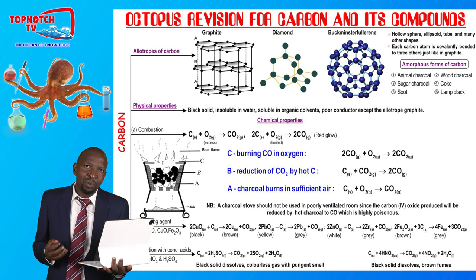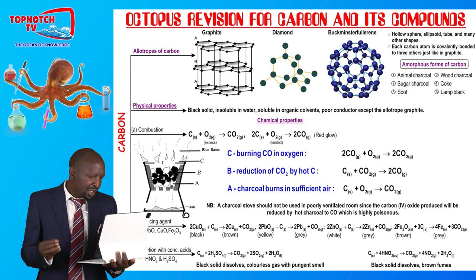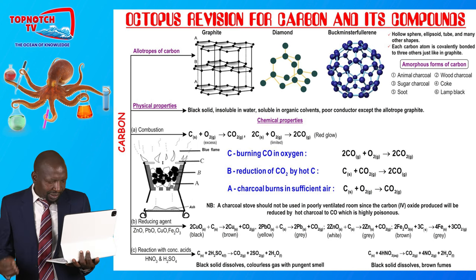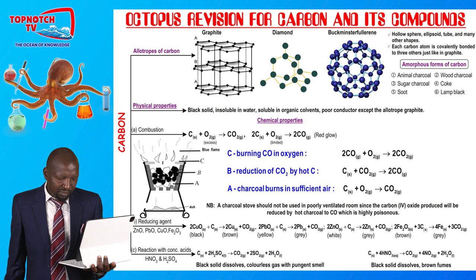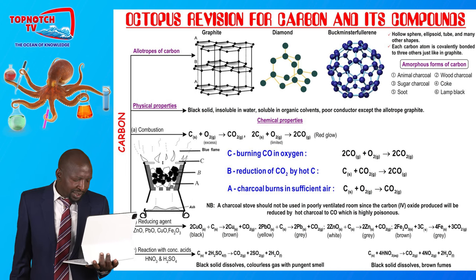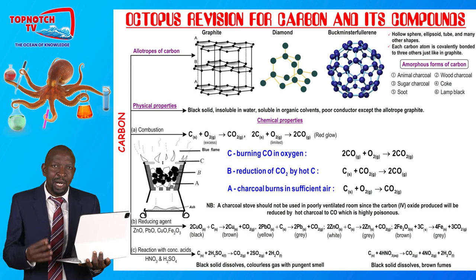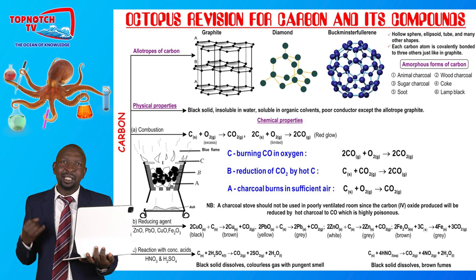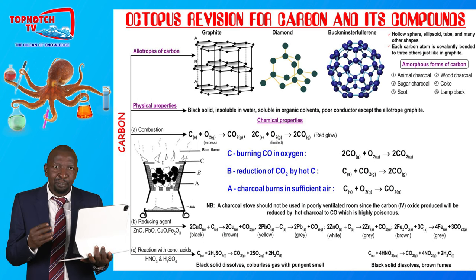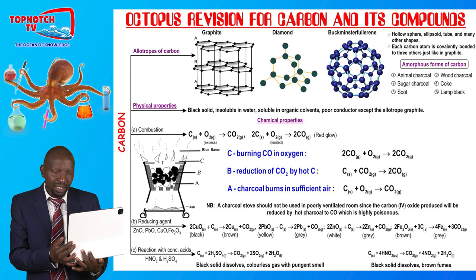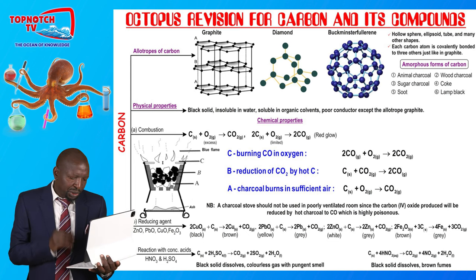Carbon also reacts with very concentrated acids — specifically concentrated nitric acid (HNO₃) and concentrated sulfuric acid (H₂SO₄). In both instances, the observation is that the black solid dissolves and there are bubbles. With sulfuric acid, there will be bubbles of a colorless gas with a pungent smell. With nitric acid, the observations are: the black solid dissolves and there will be bubbles of a brown gas. The equations for these reactions are as shown on the screen.